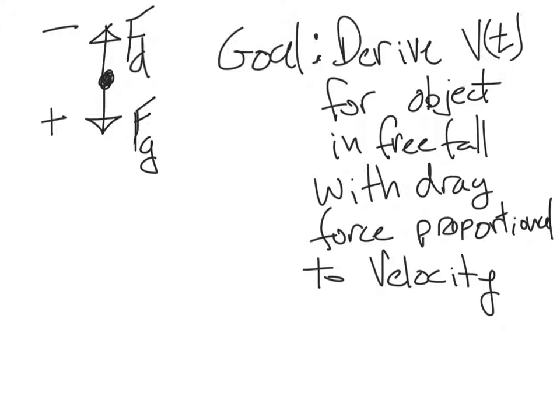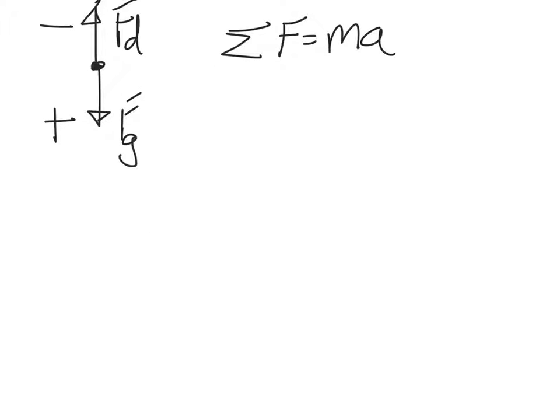So in this case, the fundamental equation that we're going to start with is the sum of the forces is equal to mass times acceleration. And so we've got the sum of the forces equals mass times acceleration as our starting point, and you've got a free body diagram. So let's add up those forces. Force of gravity is in the positive direction. The force of drag is in the negative direction. That equals mass times acceleration.